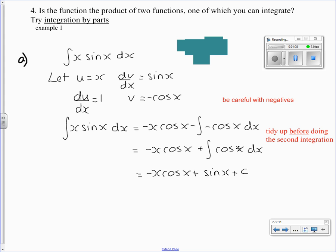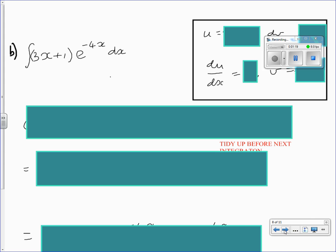And now this is an integral which you can find, so you can complete the integration. The constant of integration appears when the final integration is complete. Here's another example.